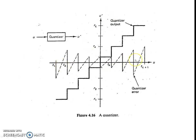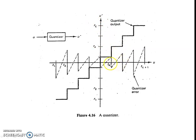This is a typical transfer function of a quantizer — it looks like a staircase. u tilde takes only discrete values r1, r2, r3, and so on up to rl. The value u tilde is assigned to rk if u is in between tk and tk+1. So if u is greater than t1 it will be assigned to r2, and if u is less than t1 it will be assigned to r1. That is what the quantization rule says.